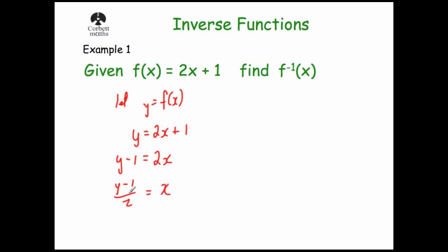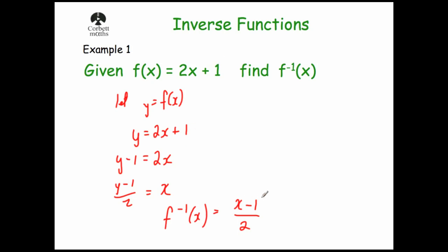So y minus 1 divided by 2 equals x — that's the inverse function. To get from x to y, multiply by 2 and add 1; to go from y to x, take away 1 and divide by 2. We write the answer as f⁻¹(x), and change the y back to x, so f⁻¹(x) = (x − 1) / 2.